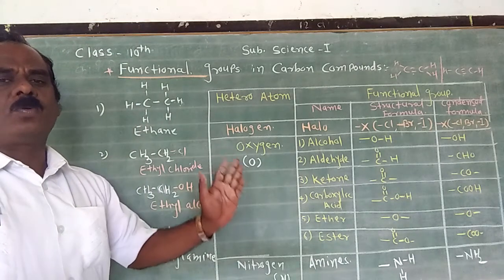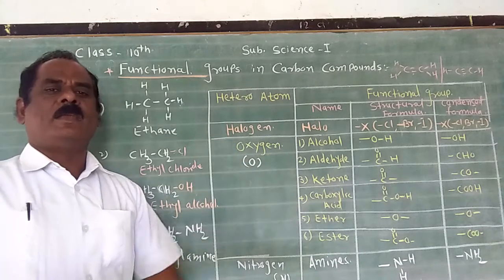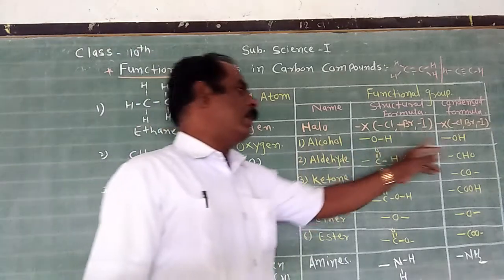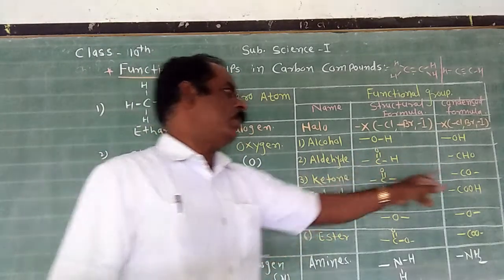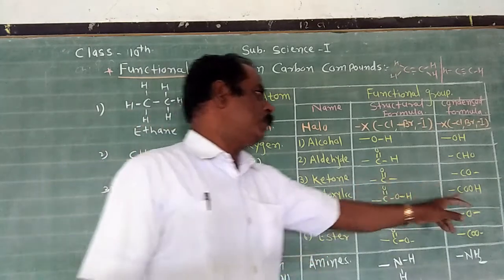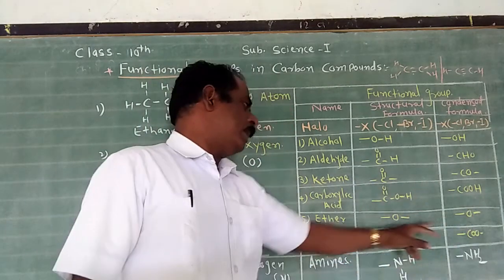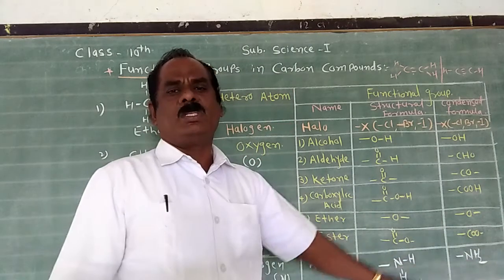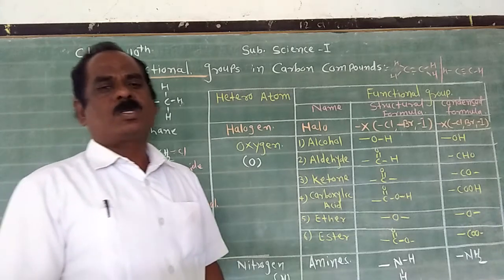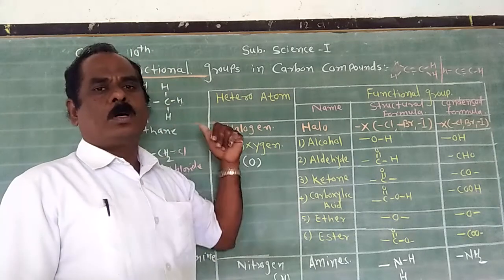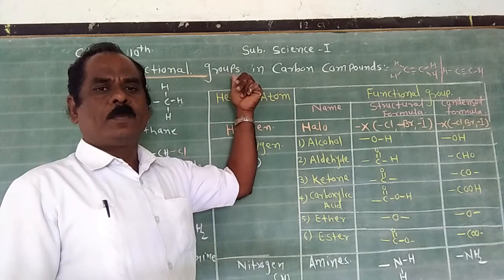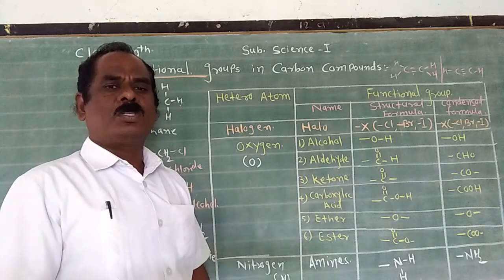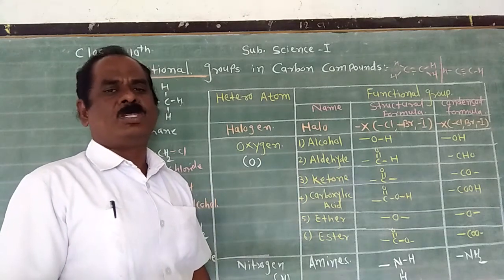You only need to remember one definition and the examples of functional groups. In short, the atom or group which is responsible for the property and reactivity of a compound is called the functional group. Examples: alcohol is bond OH, aldehyde is bond CHO, ketone is bond CO, carboxylic acid is bond COOH, ether is bond O bond, ester is bond COO, and amine is bond NH2. A question may be asked in the examination: write a short note on functional groups in carbon compounds, or define functional group and give two examples. Thank you.